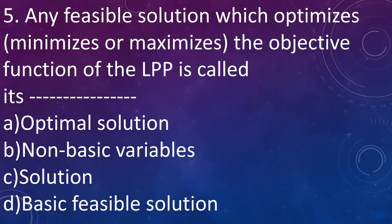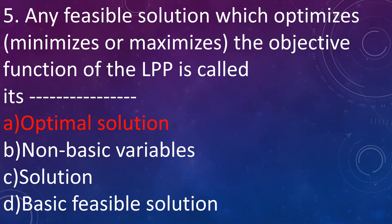Next question: any feasible solution which optimizes — that is minimizes or maximizes — the objective function of the linear programming problem, is called: A. Optimal solution, B. Non-basic variables, C. Solution, D. Basic feasible solution. Answer is optimal solution. If the objective function is maximize Z, the values of the variables which give the maximum value of Z are called optimal solution. Or if it is minimize Z, the values giving the minimum value of Z are the optimal solution. First, the solution needs to be a feasible solution; then from the set of feasible solutions, the optimal solution is calculated.